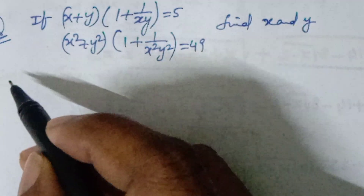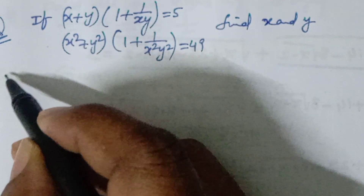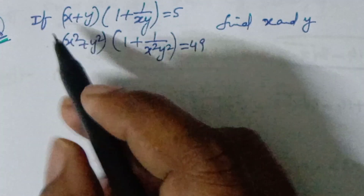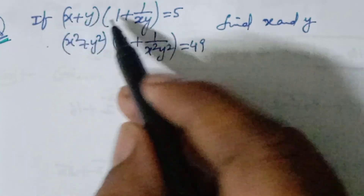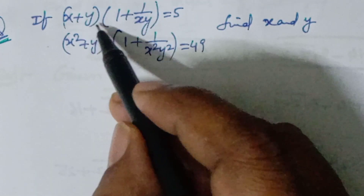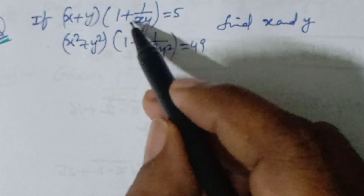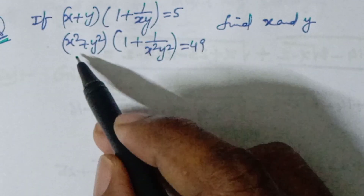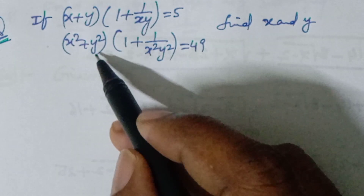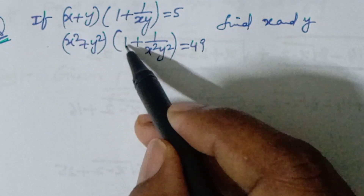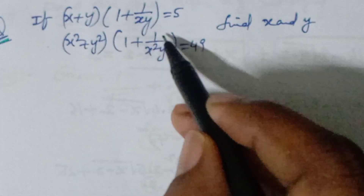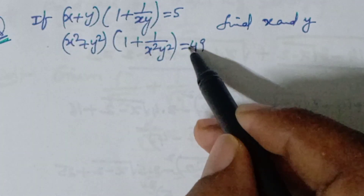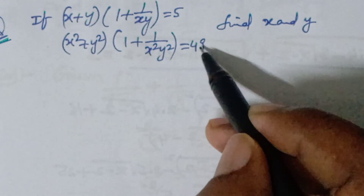Good morning, welcome to NCG Max. The question is: given (x + y)(1 + 1/xy) = 5 and (x² + y²)(1 + 1/(x²y²)) = 49, find the values of x and y.